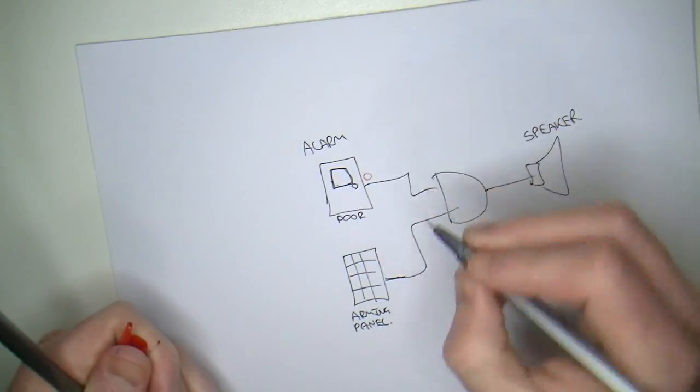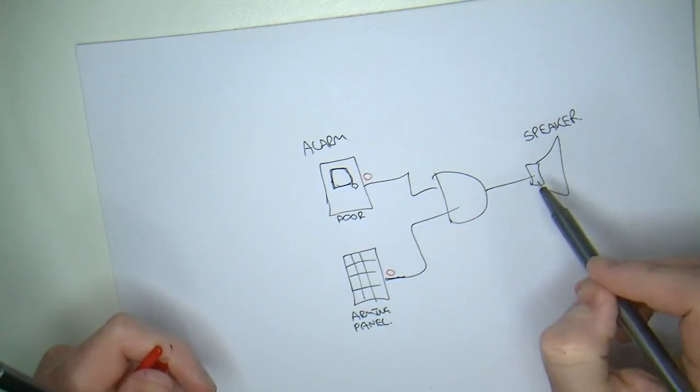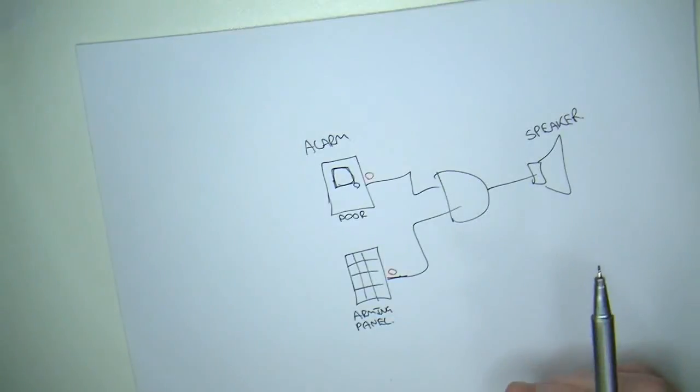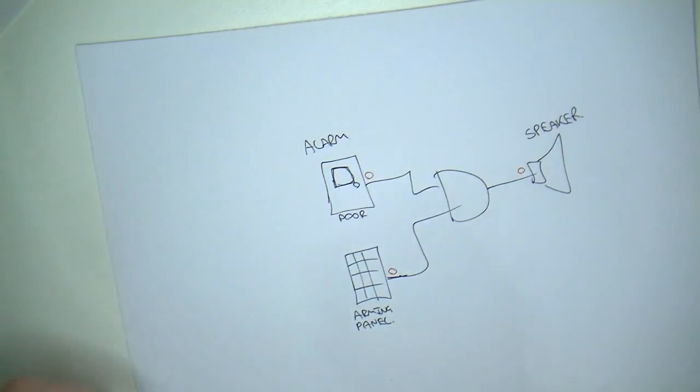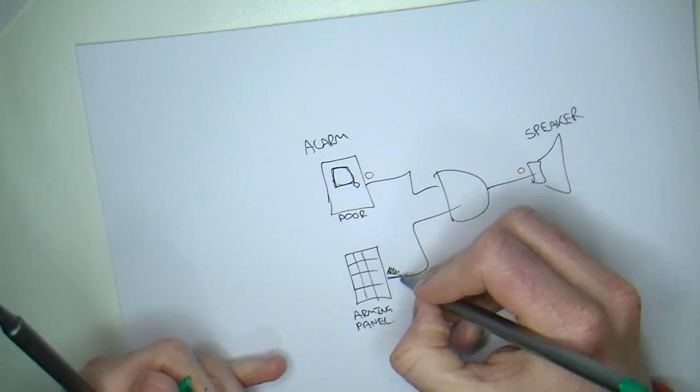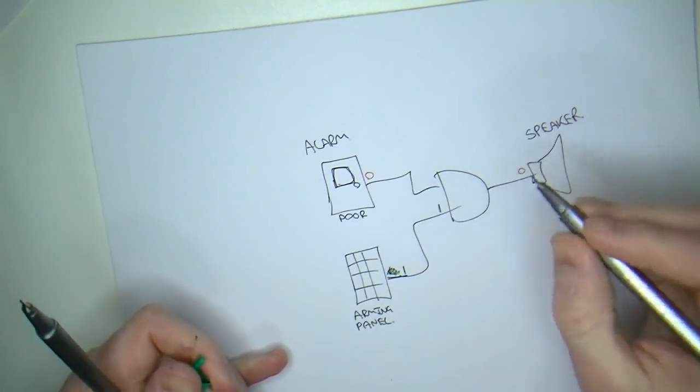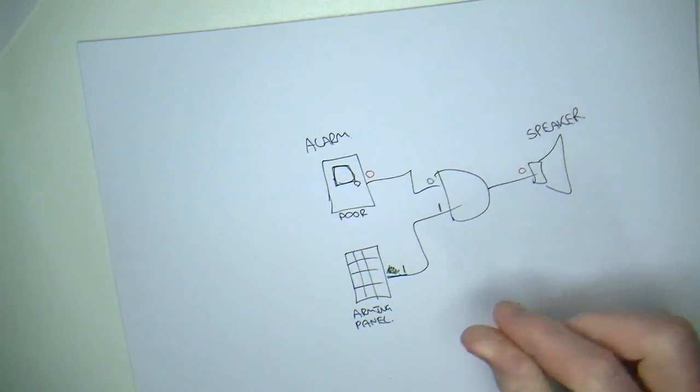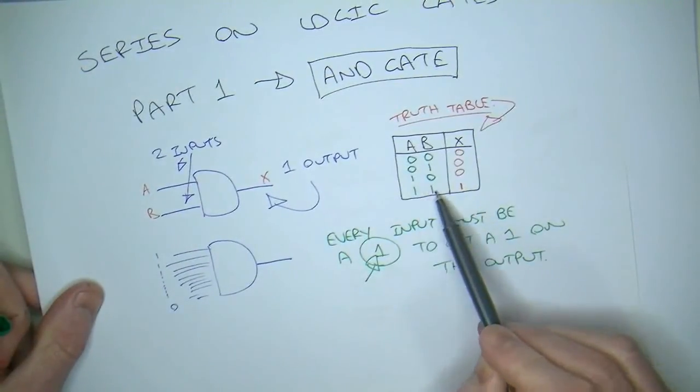And we want that speaker to start making noise when the alarm is armed and someone has broken in through the only door, which is this door. So, if nobody's broken in, we get a logic zero from the door sensor. And if it's not armed, we get a logic zero. So, remember the truth table for an AND gate is the only time you get a one is when both inputs are a one. So, let's say that it's a zero at the moment, so no noise. Let's say we want to go out. So, we're going to arm the alarm system. So, we'll put in our combination. That will arm it, giving us a logic one.